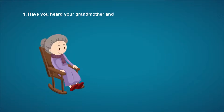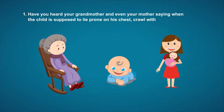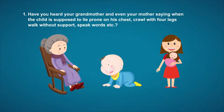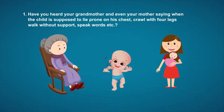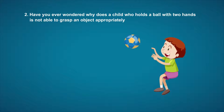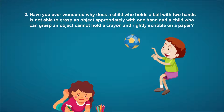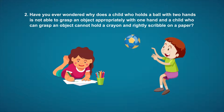Let me ask you three questions. The first question is: have you heard your grandmother and even your mother saying when the child is supposed to lie prone on his chest, crawl with forelegs, walk without support, or speak words? The second question is: have you ever wondered why a child who holds a ball with two hands is not able to grasp an object appropriately with one hand, and a child who can grasp an object cannot hold a crayon and rightly scribble on a paper?